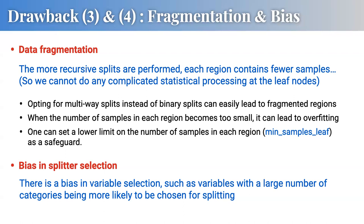The other problem is more technical: decision trees pick one variable from available variables at each split, but this selection has a strange bias. Variables with a large number of categories — like a variable representing a country name — tend to be selected more because they allow finer partitions. This is sometimes problematic, making it harder to effectively use decision trees in practical situations.